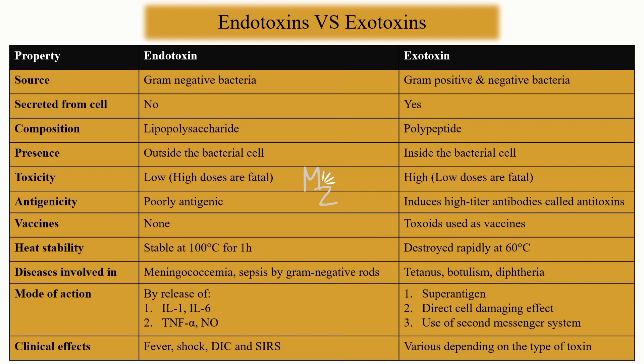Exotoxin also acts in response to the release of certain cytokines, but it first acts as a superantigen. There are three types of exotoxin action: type 1, type 2, and type 3 — I have a detailed video on those types, find the link in the description or top right corner. Exotoxin can also directly damage the cell by forming pores in the cell membrane, damaging the cell membrane, or using a second messenger system to inhibit protein synthesis or alter enzyme activity.